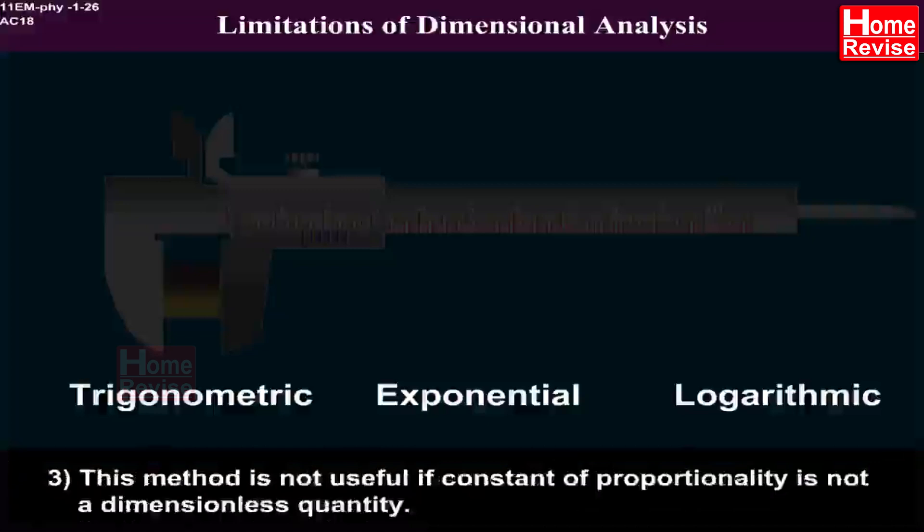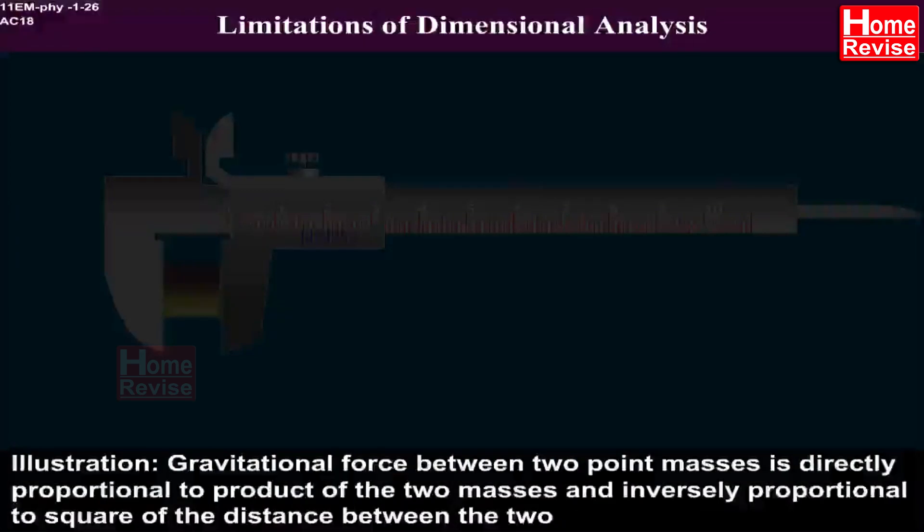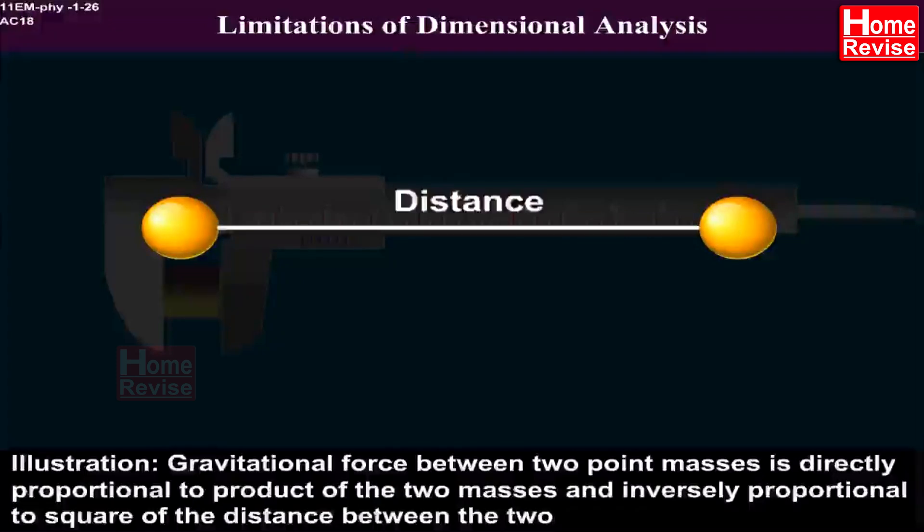Illustration: Gravitational force between two point masses is directly proportional to product of the two masses and inversely proportional to square of the distance between the two. 4.